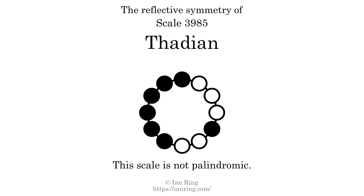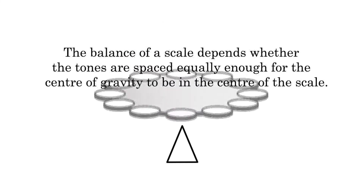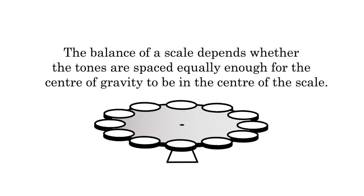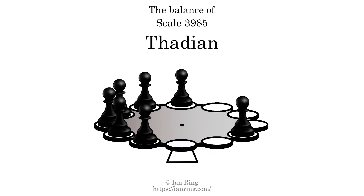The sameness quotient measures the proportion of heteromorphic differences among a set's intervals. A scale with a higher sameness has fewer differences, so it is also a good candidate for musical usefulness. The sameness quotient is 0.317. This scale has no reflective symmetry. This scale has a different pattern of intervals ascending and descending, so it is not palindromic. This scale has no ridgetones. This scale is not balanced.